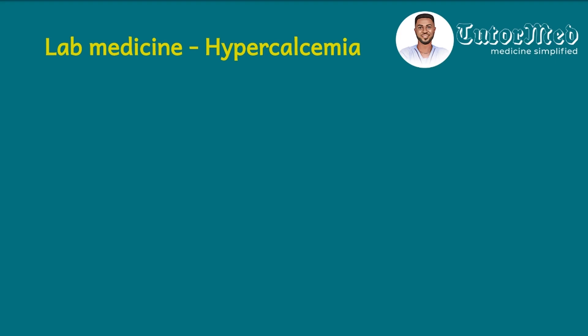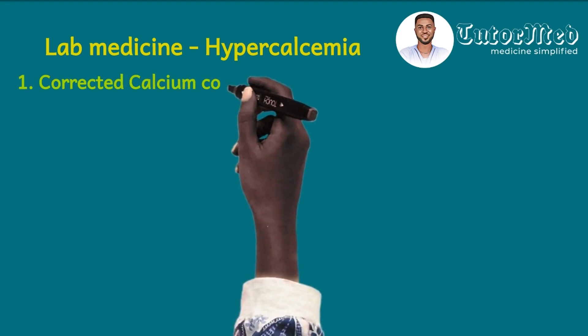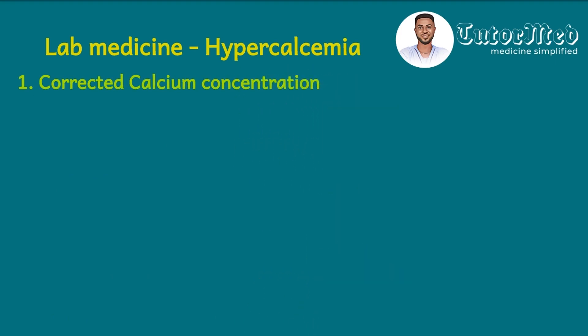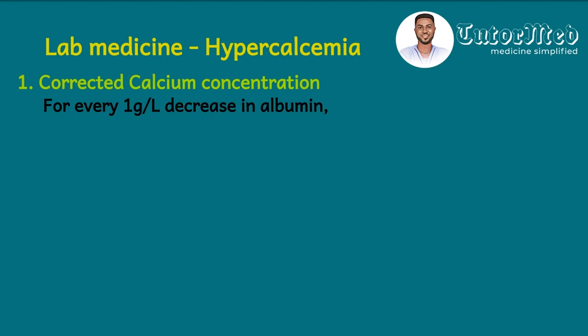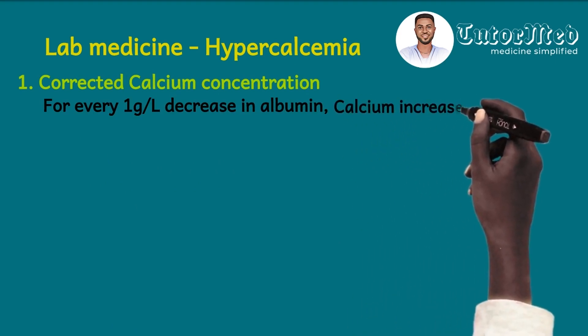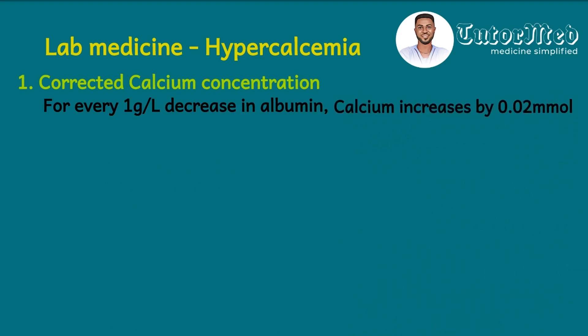For question one — corrected calcium concentration — the rule is: for every 1 g/L decrease in albumin, calcium increases by 0.02 mmol/L. There is nothing to understand here; this part tests memory. That is why from the very beginning we said the exam also tests our ability to memorize.